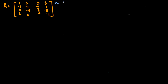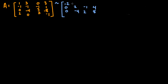The first thing we do is add row 1 and row 2 and replace row 2 with that sum: 1 + negative 1 = 0, 3 + negative 1 = 2, 0 + negative 1 = negative 1, 3 + 1 = 4. The next row already has a 0 in the first column. Then we multiply the top row by negative 2 and add it to the final row: negative 2 + 2 = 0, negative 6 + 0 = negative 6, 0 + 3 = 3, negative 6 + negative 1 = negative 7. That completes the first pivot column.